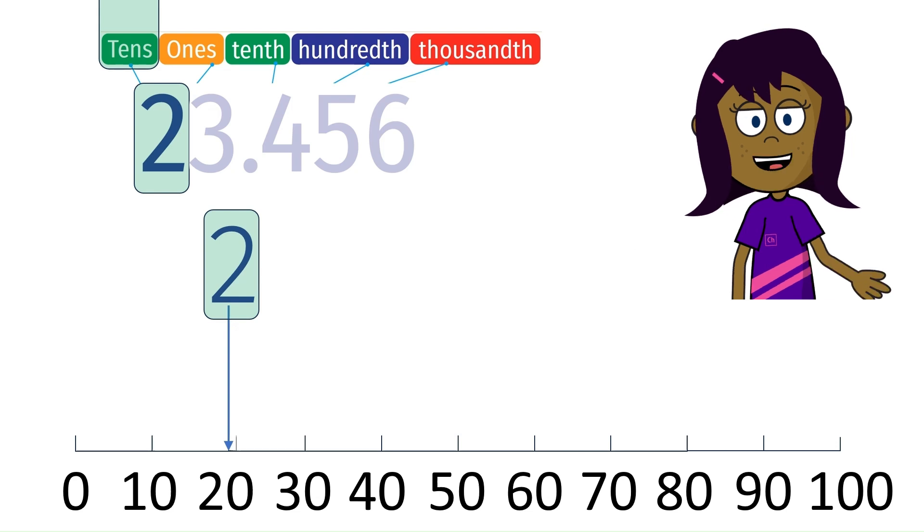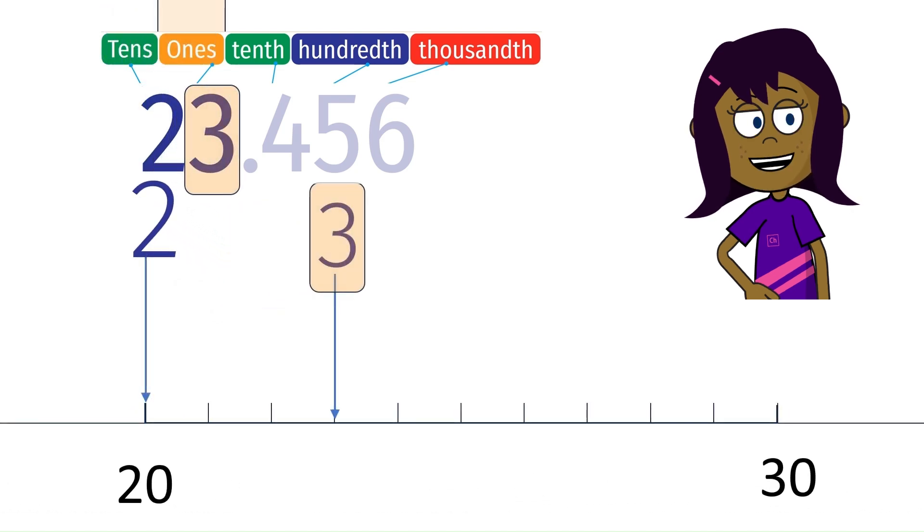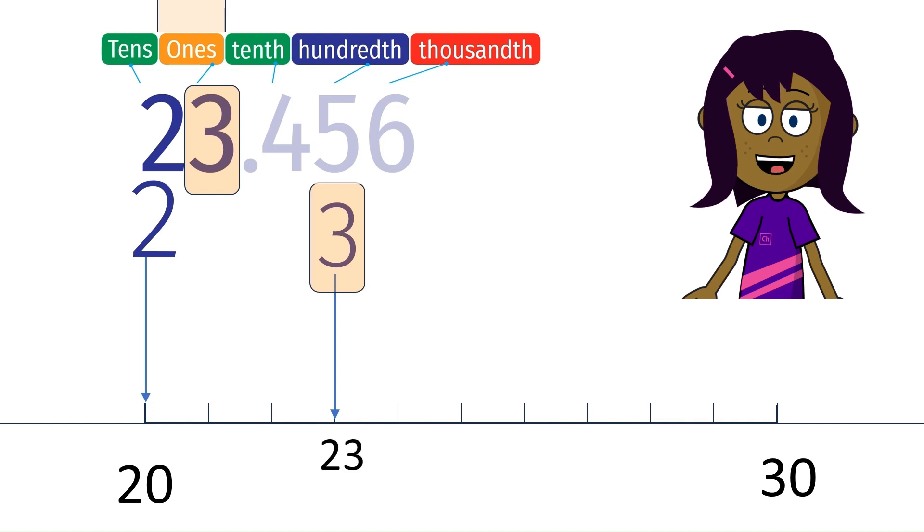Let us zoom in to the ones place after 20. Three is in ones place, making the place value to be 3. So we have location of 23.